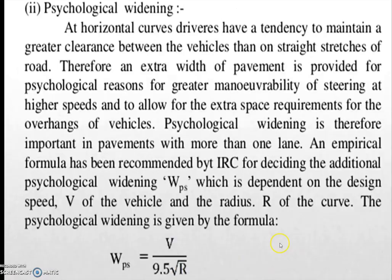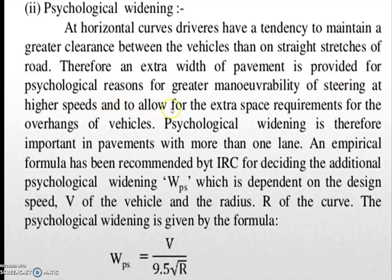The second type is psychological widening. At horizontal curves, drivers have a tendency to maintain a greater clearance between vehicles than on straight stretches of the road. At a turning point, drivers take a wider turn, which causes difficulty for vehicles coming from the opposite side. This is completely a psychological conception. Therefore, extra width of pavement is provided for psychological reasons — for greater maneuverability of steering at higher speeds and to allow for the extra space requirements for the overhangs of vehicles. Psychological widening is therefore important in pavements with more than one lane.